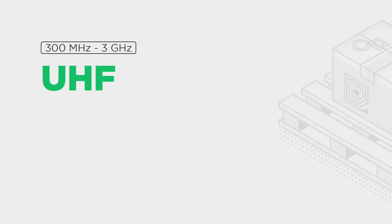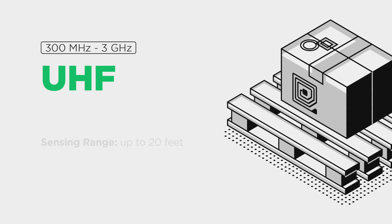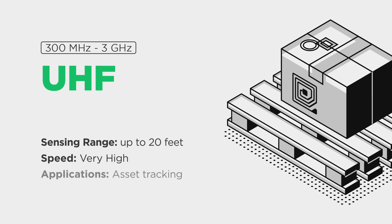Lastly we have ultra high frequency, or UHF. This style of RFID will give you the largest sensing range, with capabilities of sensing tags up to 20 feet away. UHF will pick up and read all tags visible, meaning it is great for asset tracking. This is the most widely used RFID frequency in inter-logistic applications. However, it should be noted that UHF struggles picking up tags on metal and in environments where RFID tags are surrounded by metal.